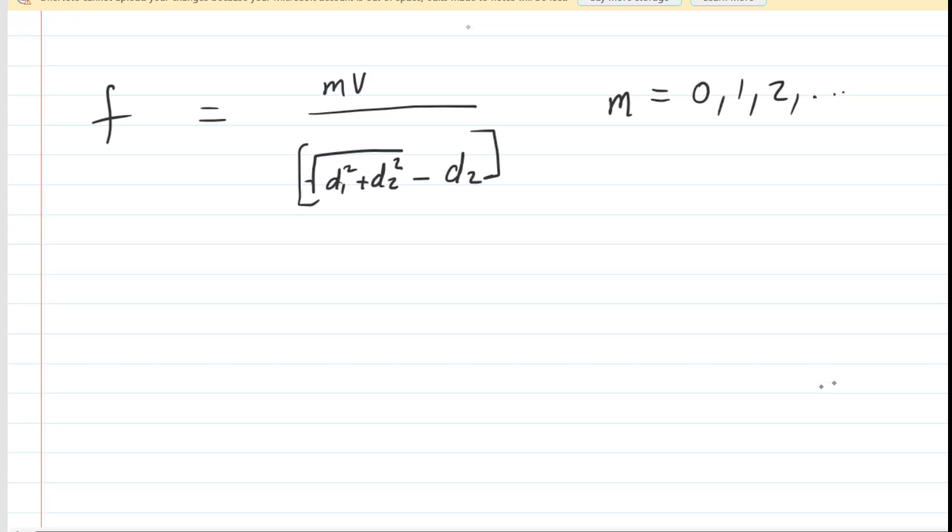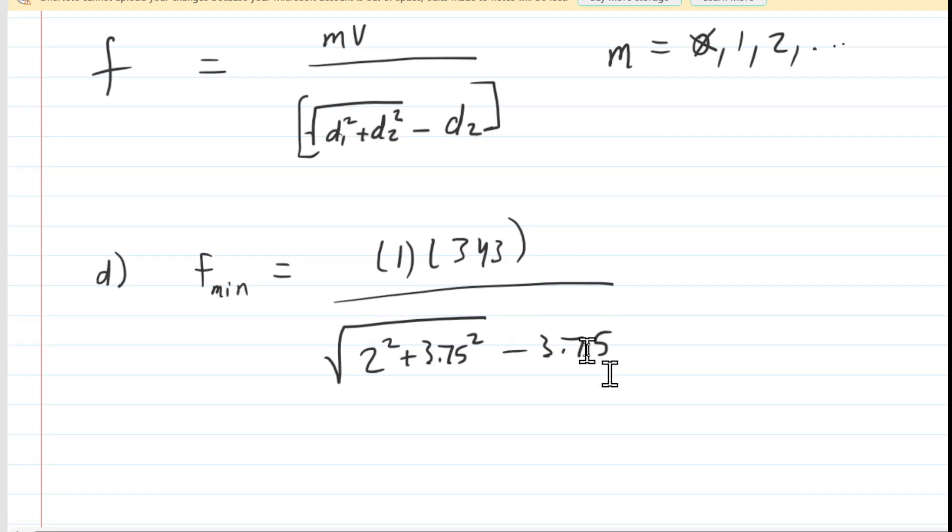And now we just have to plug in particular values for m. We don't want to use 0 for m. Even though we're looking for the minimum frequency in part d, if we put 0 in for m, then the frequency becomes 0, so there would be no sound whatsoever. So instead of using 0 for the minimum frequency, we're going to plug in 1. And if we simplify that, then the answer to part d becomes 686 hertz.